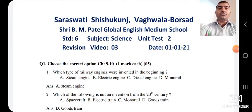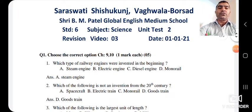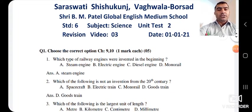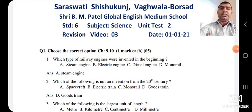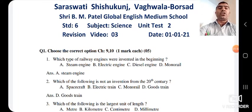The second question: which of the following is not the invention of the 20th century? The options are spacecraft, electric train, monorail, and goods train. Spacecraft, electric train, and monorail were inventions of the 20th century. So the answer is D — goods train — it is not the invention of the 20th century.